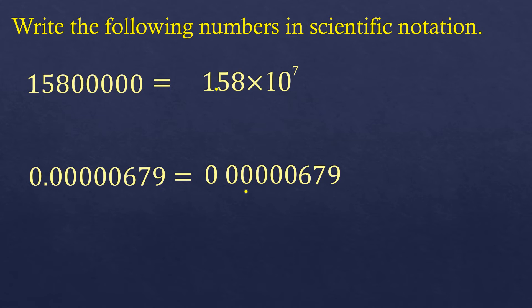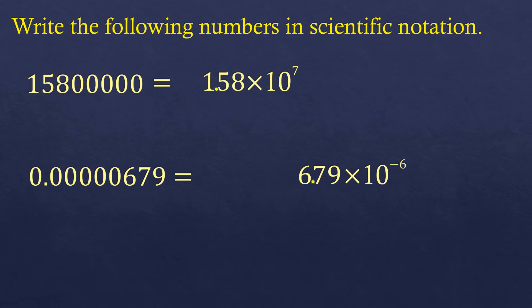So we move it: 1, 2, 3, 4, 5, 6. We move it 6 times, so we remove the zeros and place times 10. Since we moved 6 times, it's times 10 to the power of 6, but it will be negative because we moved to the opposite side — to the right instead of the left. That's why the exponent is negative 6. That's how you convert very small numbers to scientific notation.